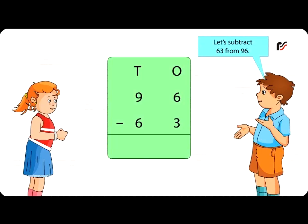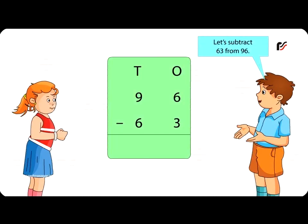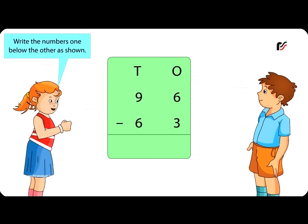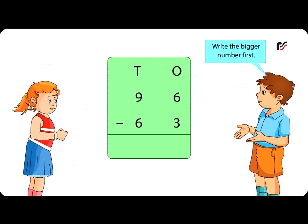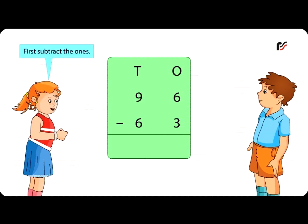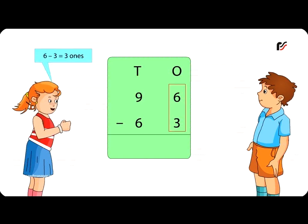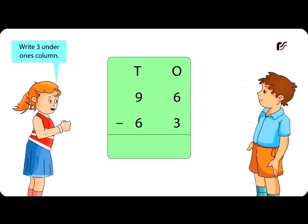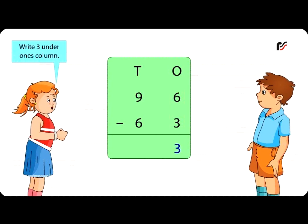Let's subtract 63 from 96. Write the numbers one below the other as shown. Write the bigger number first. First, subtract the ones. Six minus three is equal to three ones. Write three under the ones column.